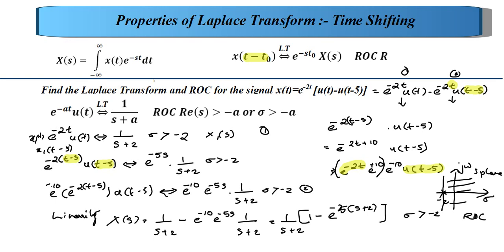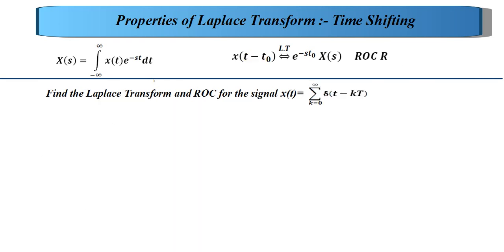Always verify whether the given signal is truly time shifted. In this problem, the exponent uses t while the step uses (t - 5), so we cannot directly apply the time shifting property. We must first manipulate the signal into the required form, which introduces an extra constant term.